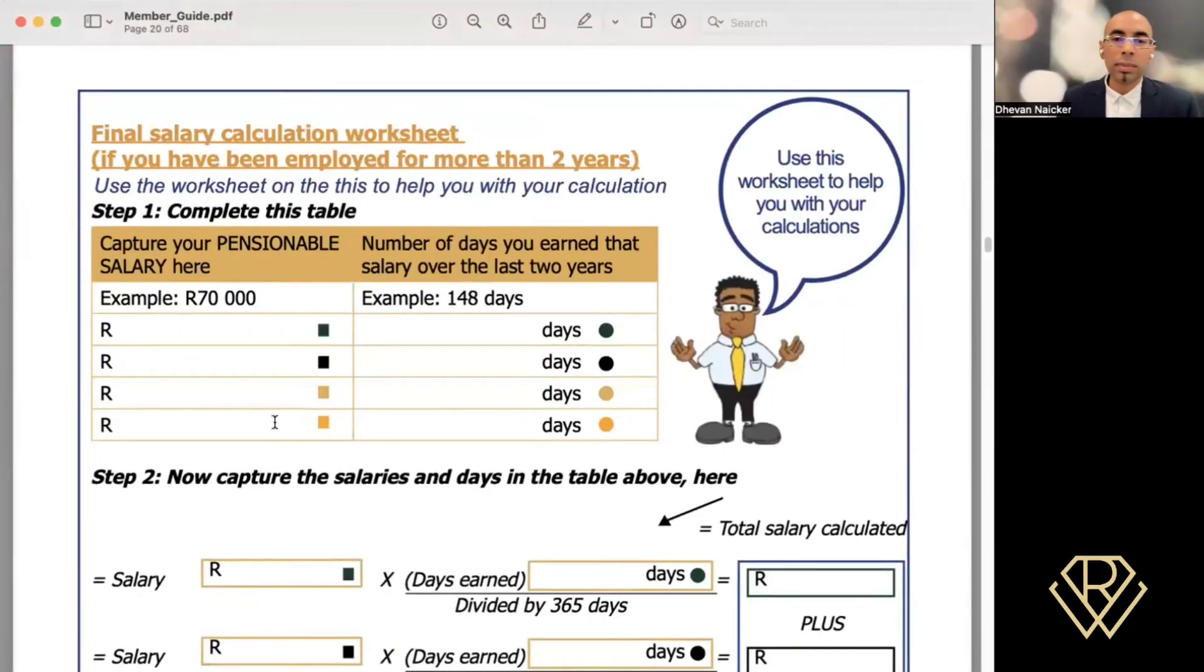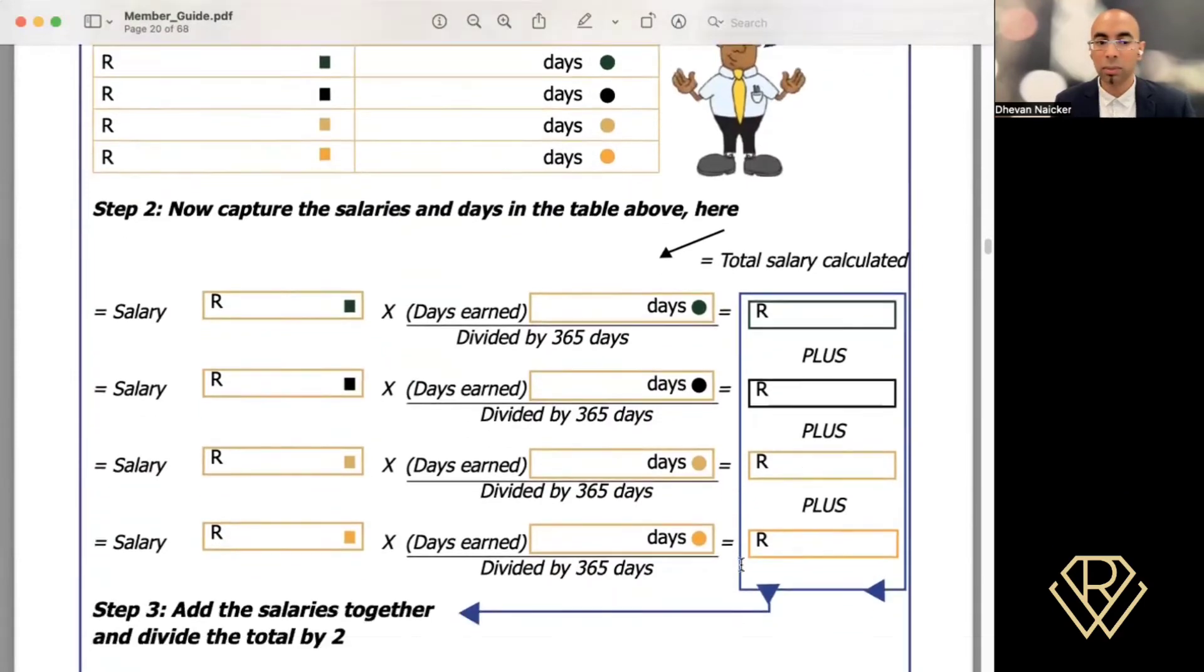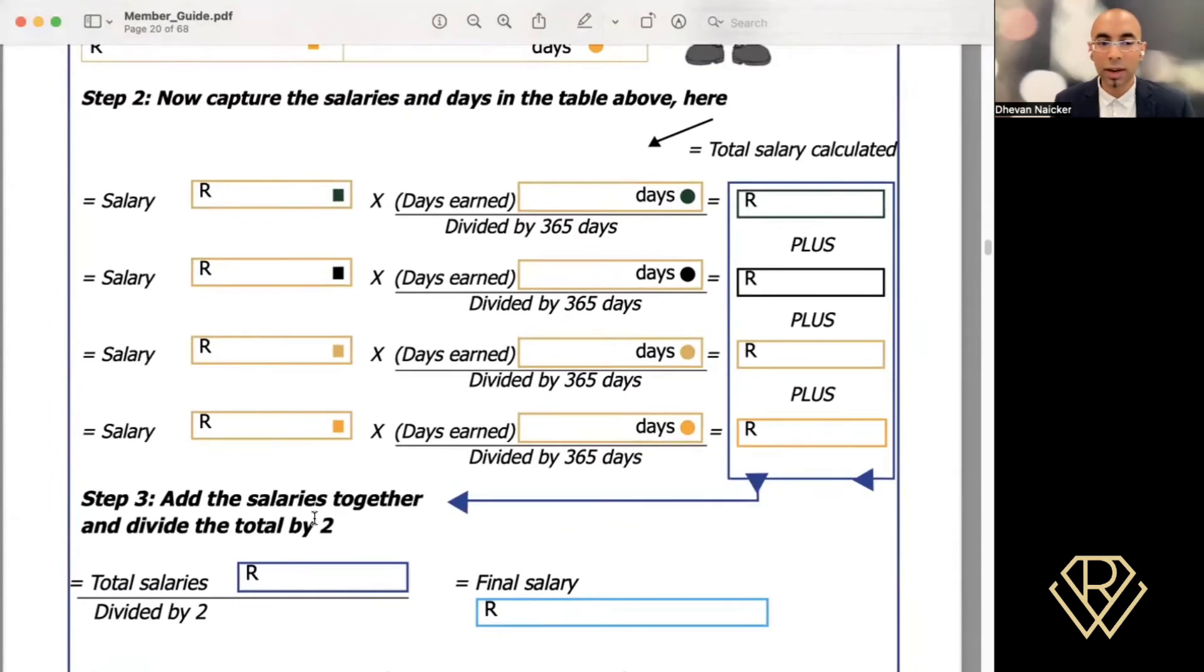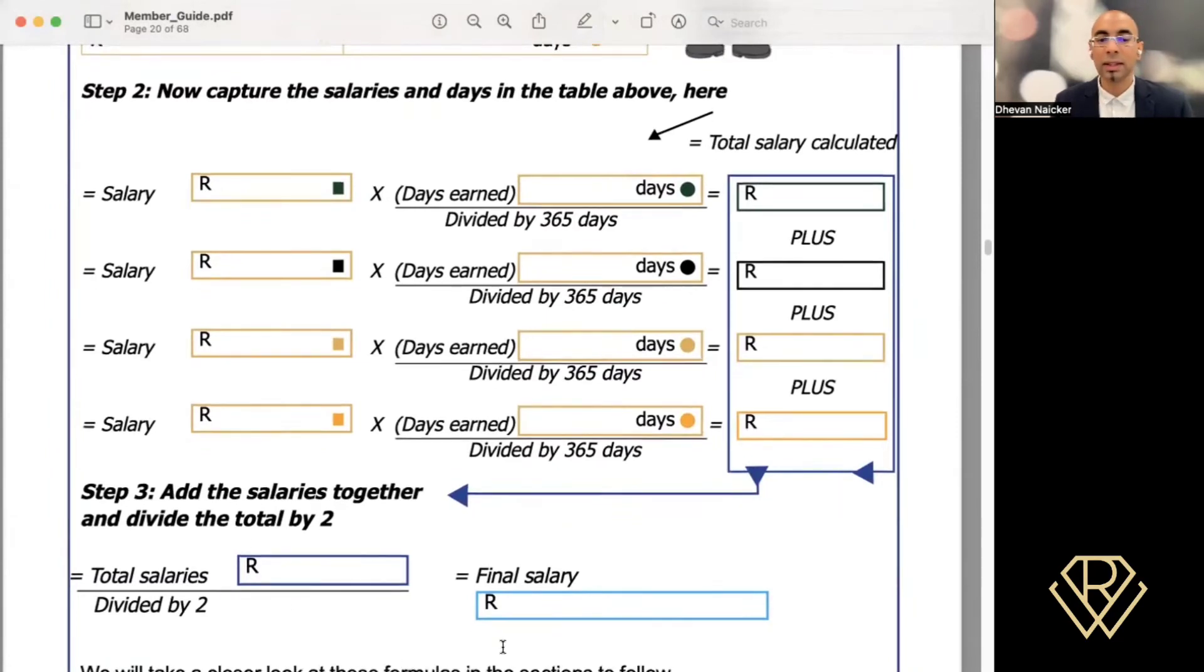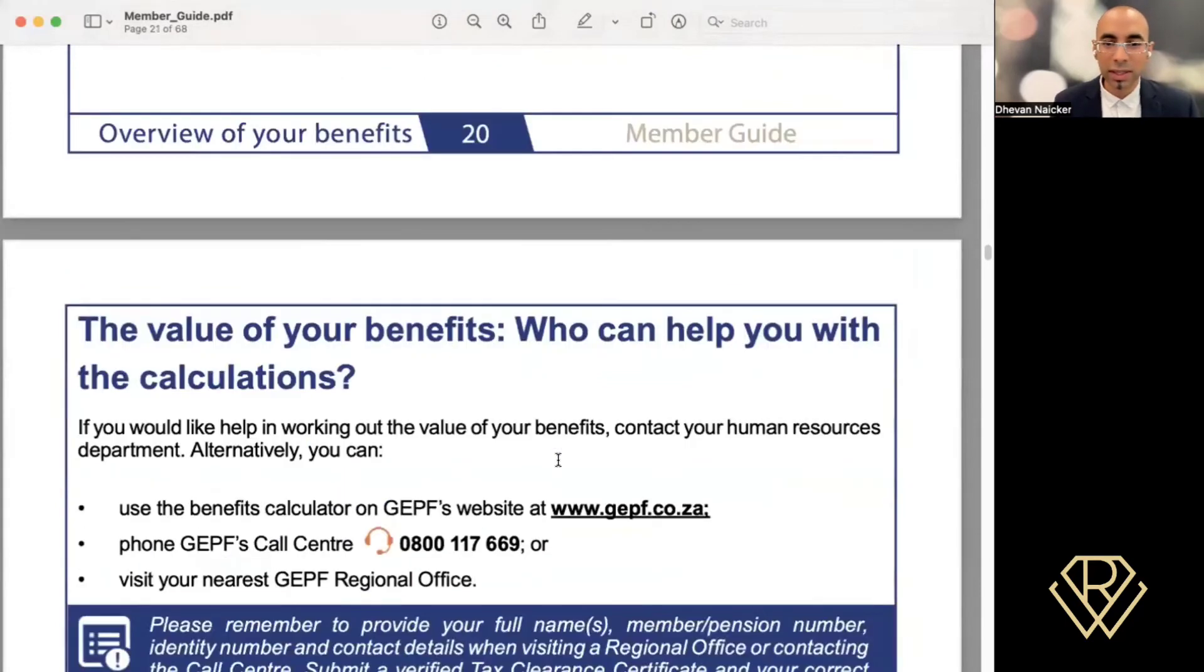So you can see here on page 20, there's a formula, it's a worksheet, that allows you to calculate exactly what your benefits are. They basically have a look at the last two years of earnings, and you'll fill out the information here. You'd have to work this according to your number of days that you've earned a particular salary. And you'll add each of these components together. Once you get that total, you will then divide that total by two. And then that provides you with what they're calling now as their final salary. But there is an easier way for you to get this.